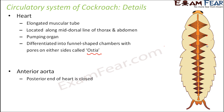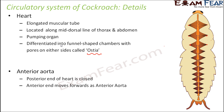The anterior aorta is located at the anterior end of the heart. The posterior end of the heart is closed — it is not connected to any other organ. At the anterior end, the vessel moves forward as the anterior aorta, also known as the dorsal aorta. We will look at this in more detail in the next slide.